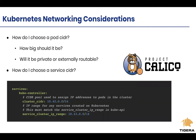Going back to the pod CIDR question: every pod is going to receive an IP address. The soft limit on pods per node is 110 by default, so you need to understand the type of workloads running, how many pods you expect, and multiply that by the number of nodes you intend to run — that gives you a good estimate. Starting with a /16 will be a great starting point. It's really important to remember that once you pick a pod CIDR, it's extremely difficult to change, especially if you're running workloads.